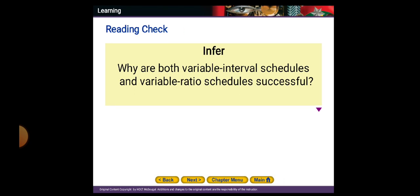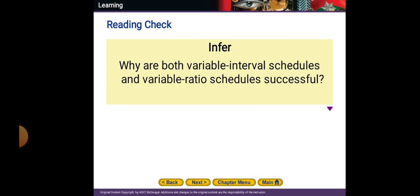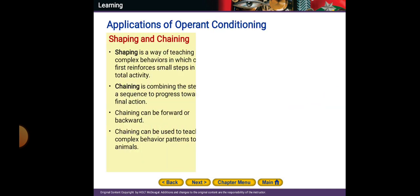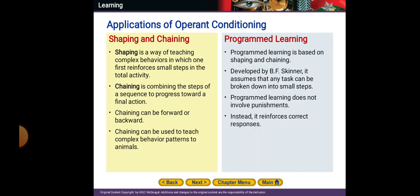Why are both variable interval schedules and variable ratio schedules successful? Because the timing is unpredictable — reinforcement can come at any time.